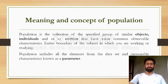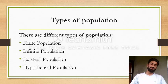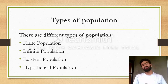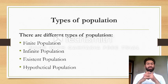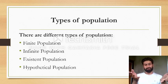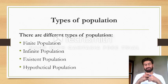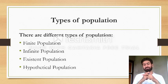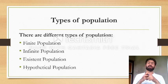Now, the types of population. There are four types of population: finite population, infinite population, existent population, and hypothetical population.